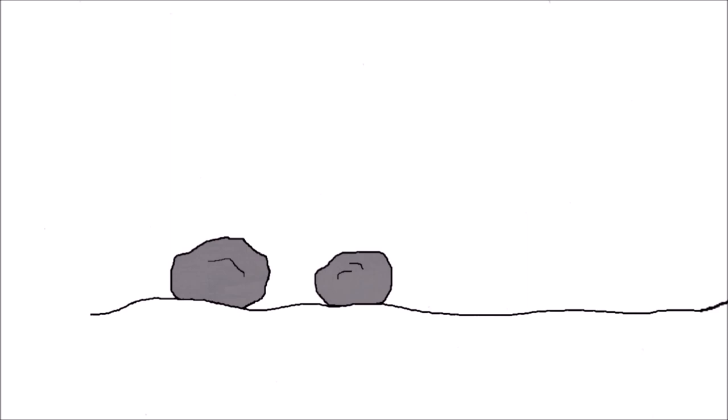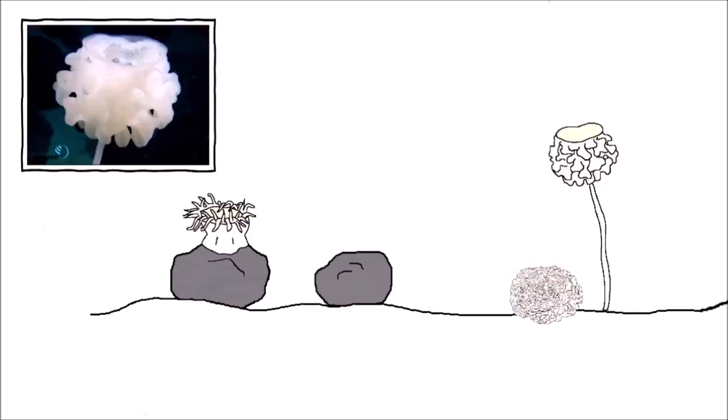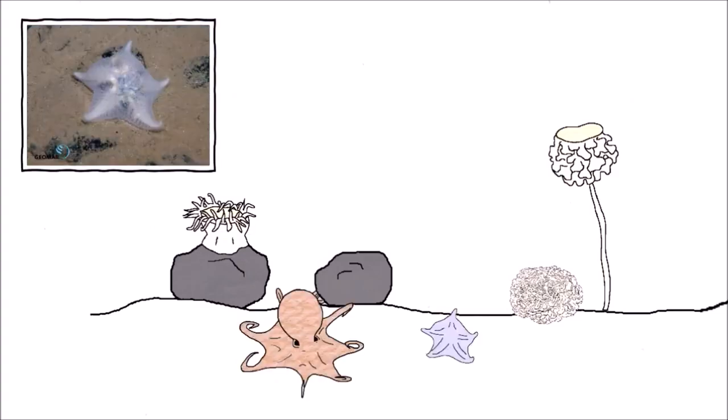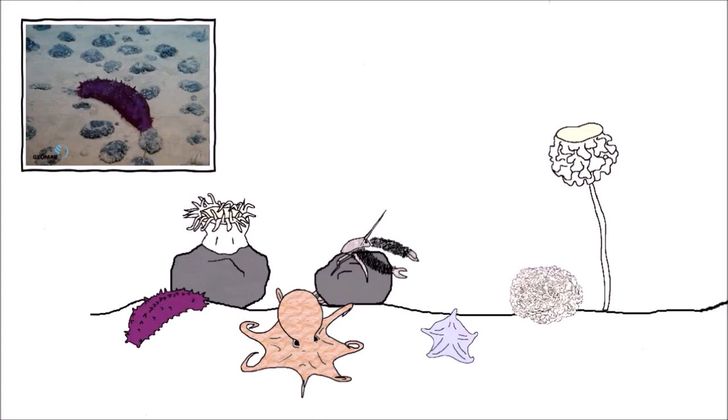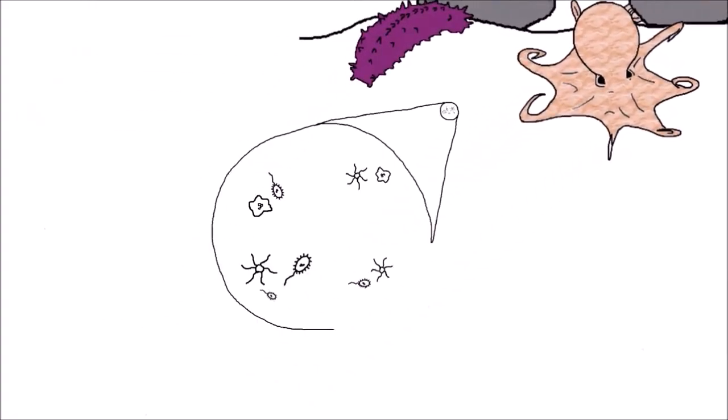For example, on the nodules you can find anemones, sponges and all kinds of coral growing on the hard substrate. Around them, octopuses, sea stars, or crabs make their way over the muddy sediment and rocks. Even purple sea slugs. And in the soil live all kinds of microbes digesting the fallen detritus.